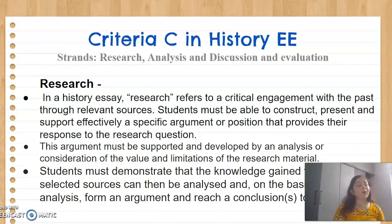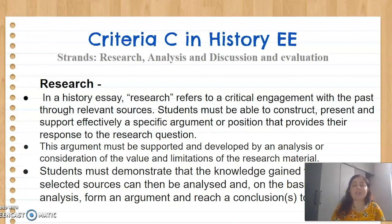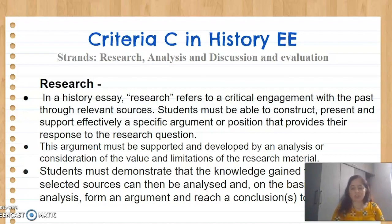One of the important criteria of the EE is Criteria C, which is critical thinking. The strands we look at for Criteria C are research, analysis, discussion, and evaluation. When we talk about research in a history EE, it refers to the critical engagement with the past through relevant sources. Students should be able to construct, present, and effectively support a specific argument or position that provides a response to the research question.